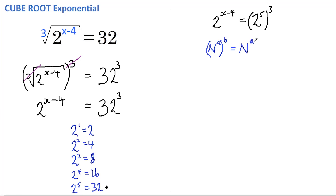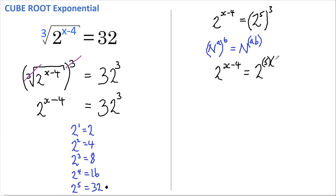So that means we can rewrite this as 2 to the power of x minus 4 equals 2 to the power of 5 multiplied by 3.